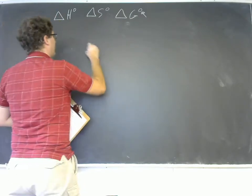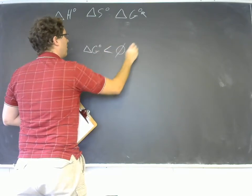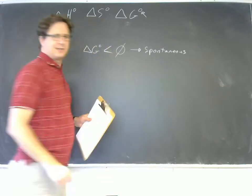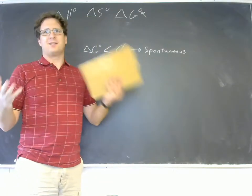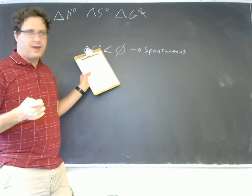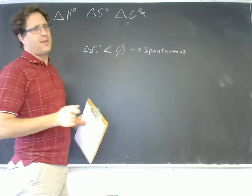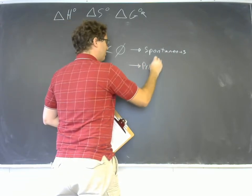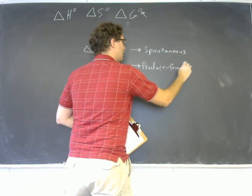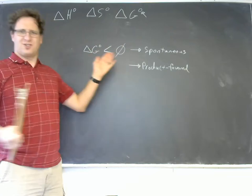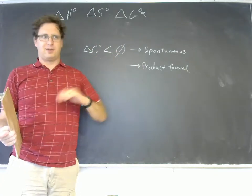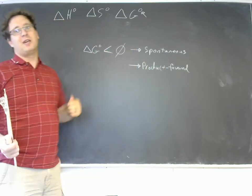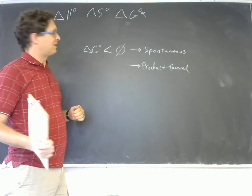When you say that ΔG° is less than zero, that means the reaction is spontaneous. What we really mean is that if we have reactants and products at one molar and one atmosphere of pressure, then the reaction will proceed forward. That means the reaction should be product favored at equilibrium, and you'll reach an equilibrium position that is product favored.